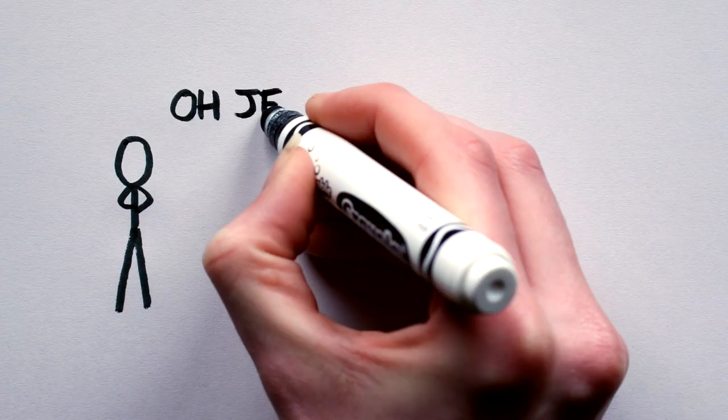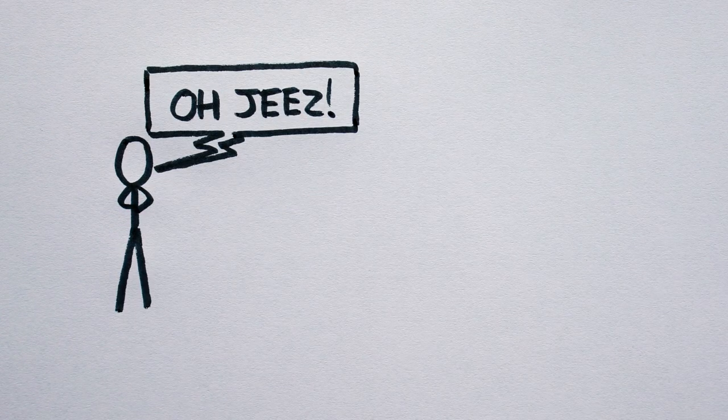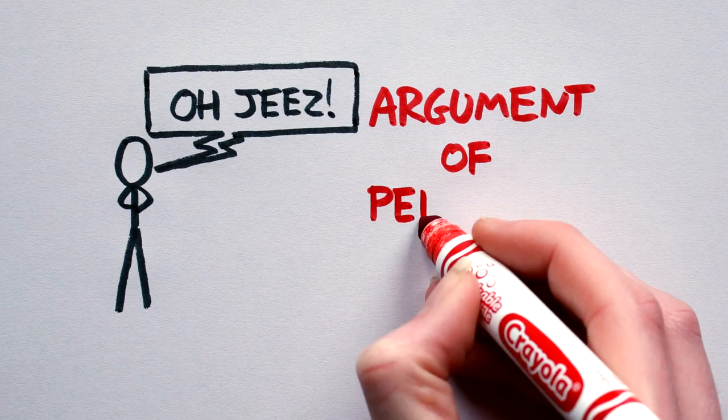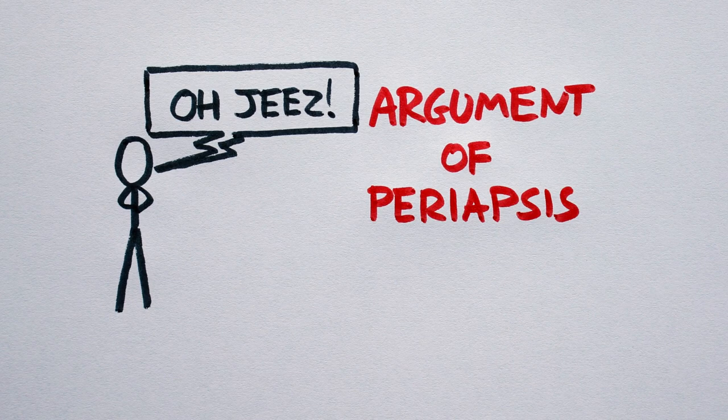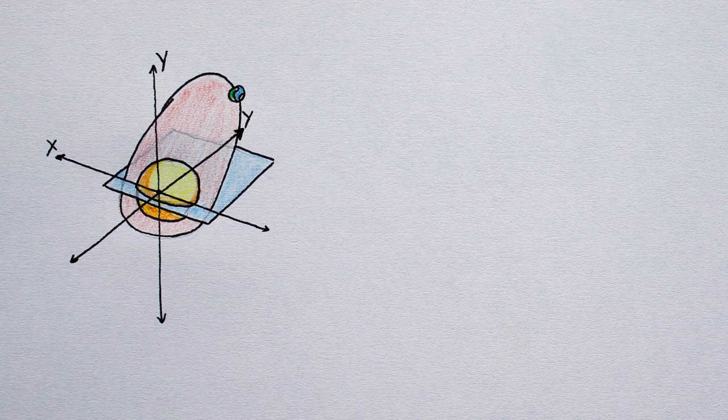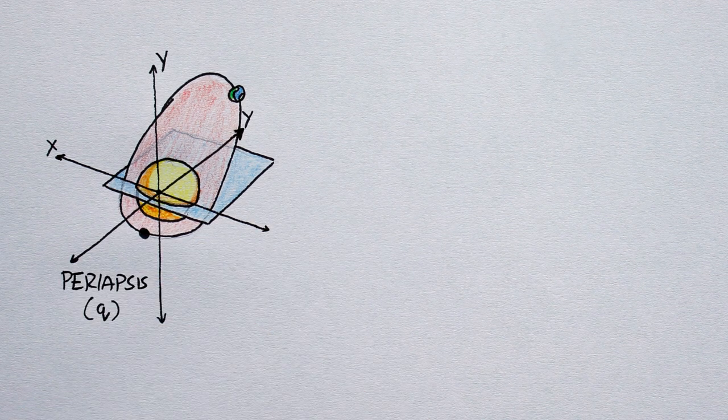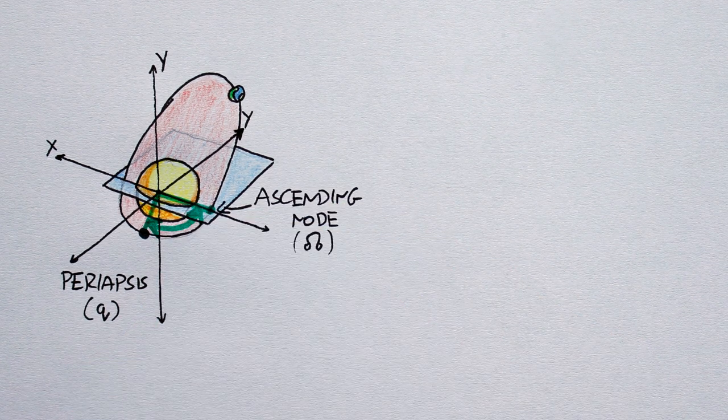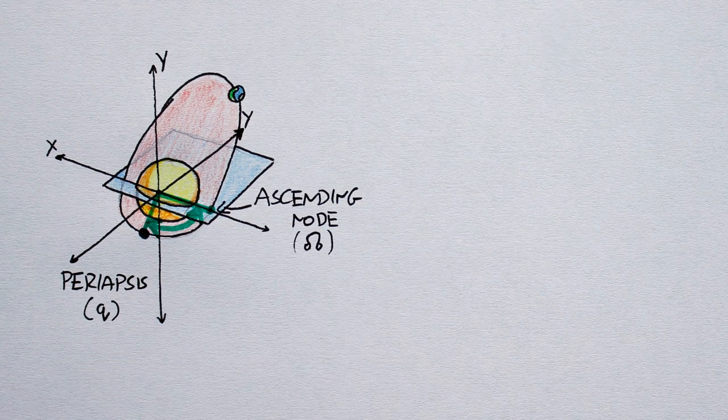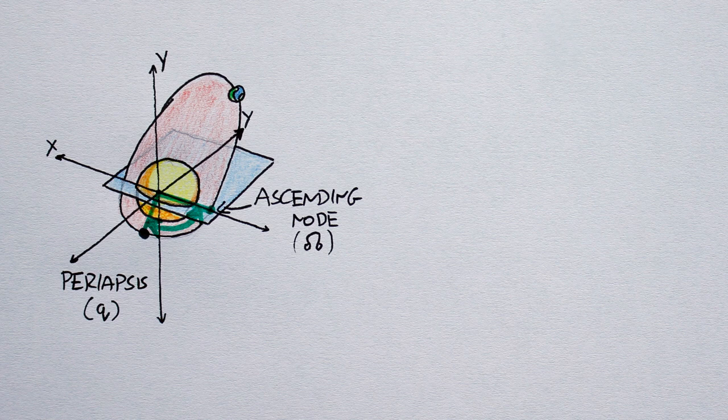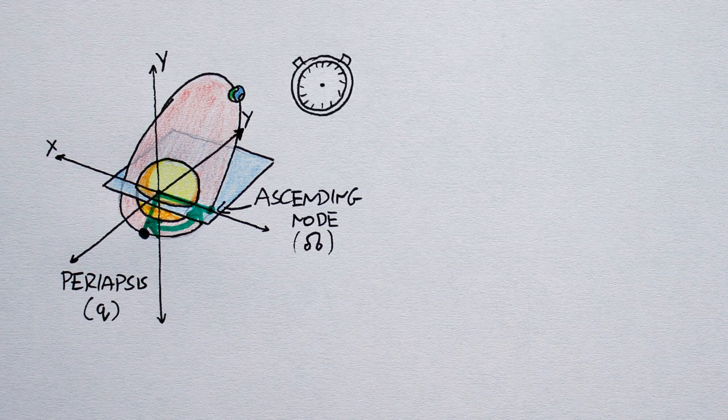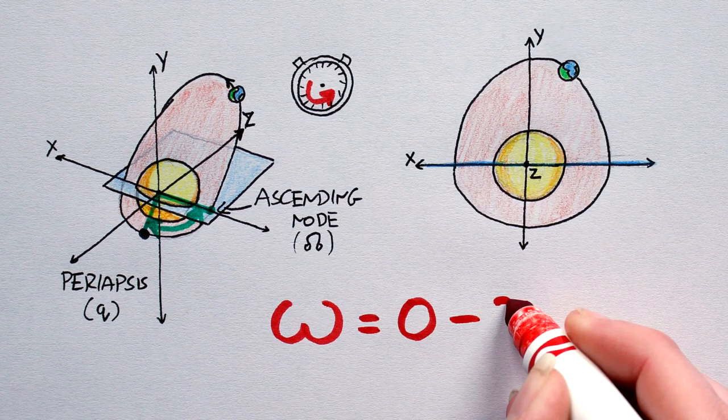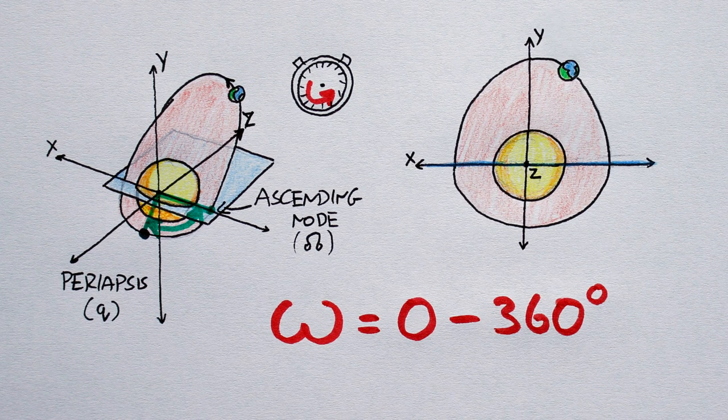Number five, roll. Ready for another terrible, terrible name? Try this on for size, the argument of periapsis. Again, another silly name for something simple enough to understand. Simply draw a line in the orbital plane, connecting the periapsis, the closest the planet comes to the star, and the center of the star. Now, again, in the orbital plane, measure the angle between this line and the ascending node, and boom, you're done.